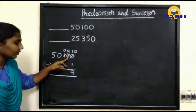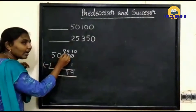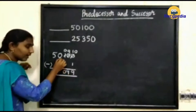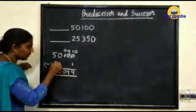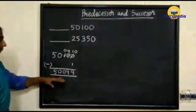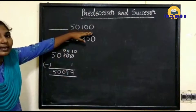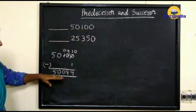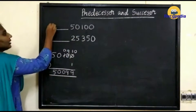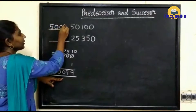Here we have 9, so directly write 9. Here we have 0, so write 0. Here we have 0, so write 0. Here we have 5, so write 5. Now, what is the predecessor of 50,100? The answer is 50,099, so here we write 50,099.